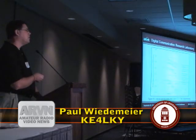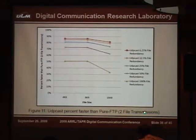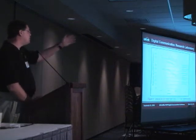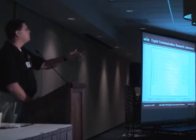If I'm only transmitting the file to one locale, you might as well use pure FTP. If I have to transmit this file to two nodes, then at this point UDP cast, even if I have 100% redundancy, still outperforms pure FTP. Because with pure FTP I have to send to net control and then site number two. I can do this in one fell swoop with UDP cast.